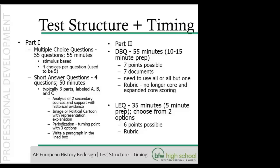The next question: on the DBQ rubric, the slide said to use all or all but one document—can students get rubric points for using fewer? Yes, the rubric is the same as the U.S. History DBQ. Students can get two points if they use and address POV in a majority of documents. Anything less than a majority earns one point. This is a great opportunity to collaborate with U.S. History and World History teachers, as you all use the same rubric.